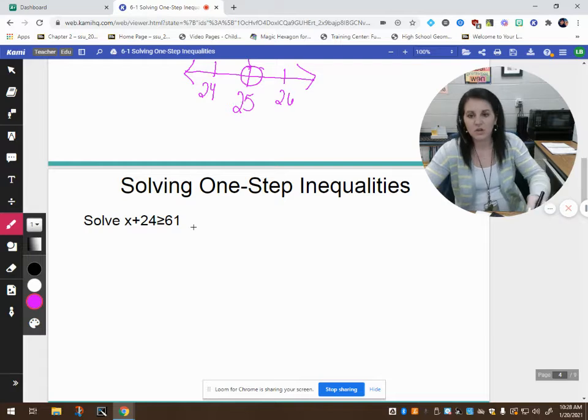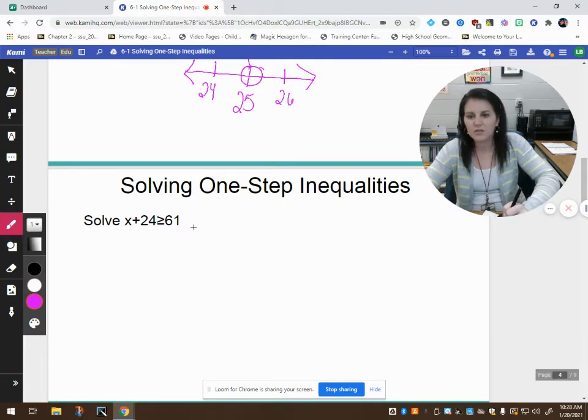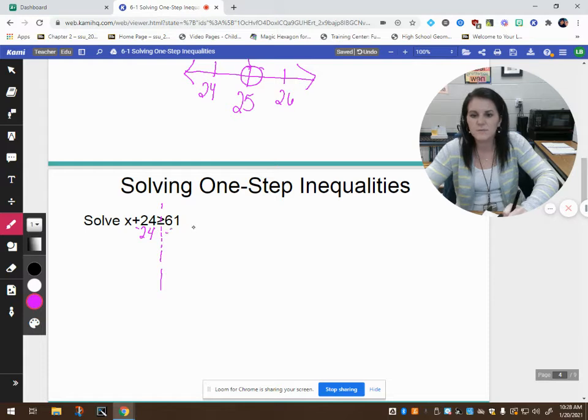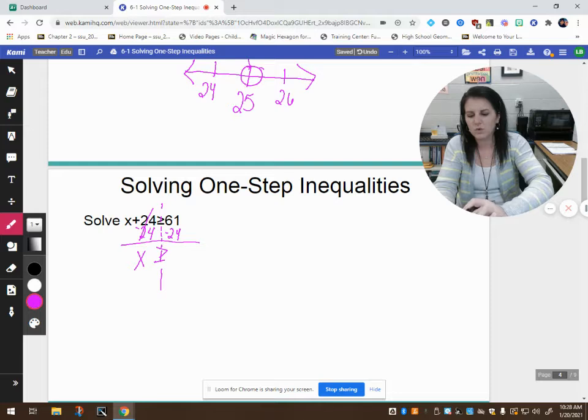Let's look at this next one. I encourage you to stop the video just to challenge yourself. See if you can do this. Make sure you're taking notes on your guided notes section. Again, I want to get rid of this 24. I want x all by itself. So the goal is to subtract 24 to get that to be 0. If I do it on one side I have to do it to the other. 24 take away 24 is 0. That leaves me with just x. 61 take away 24 is 37.